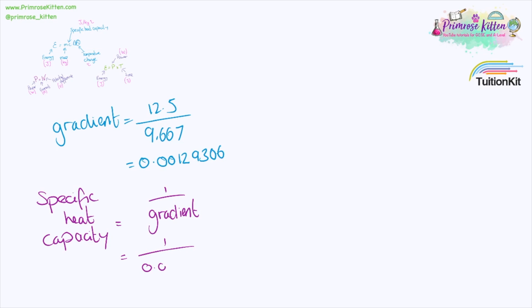Now the specific heat capacity can be found by one divided by the gradient. So specific heat capacity from my experiment came out as 773 joules per kilogram degree C. Now we haven't used this equation over here. So that's what we are going to do now.